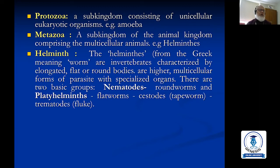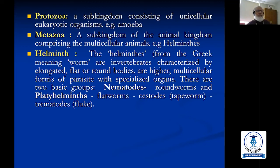Helminths come from the Greek word meaning 'worm.' They are invertebrates characterized by elongated flat or round bodies — higher multicellular forms of parasite with specialized organs. There are two basic types: nematodes (roundworms) and platyhelminthes (flatworms). Platyhelminthes include cestodes (tapeworms) and trematodes (flukes).